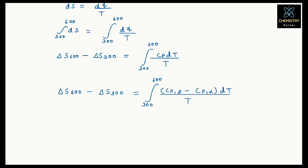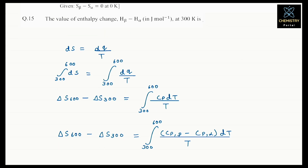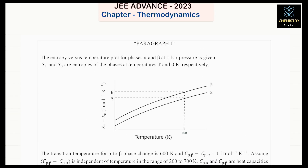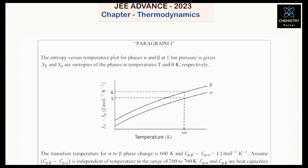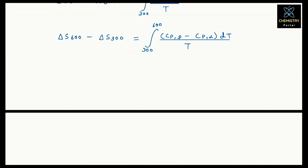Cp_beta minus Cp_alpha value is given as 1. At 600 Kelvin, looking at the graph, entropy of alpha is 5 and entropy of beta is 6, so the entropy change at 600 is 6 minus 5 equals 1. And the integration of 1/T dT gives ln T.